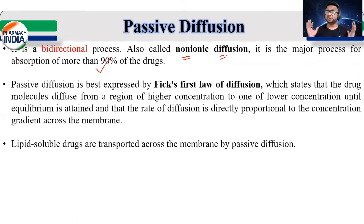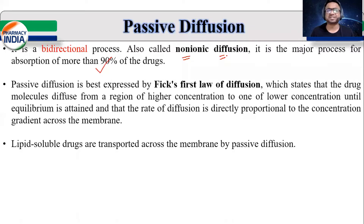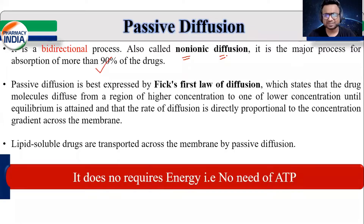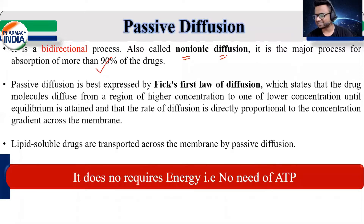So what is diffusion? Movement of the molecule from higher concentration to lower concentration is called as diffusion. तो ये process without ATP complete होती है, यहाँ पे कोई भी ATP का need नहीं होता है. That's why this process is passive in function. तो इस question का सही answer था option A, that is Passive Diffusion.